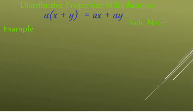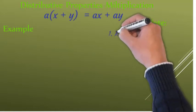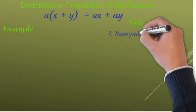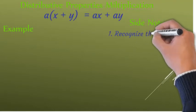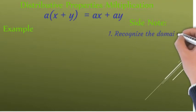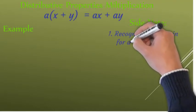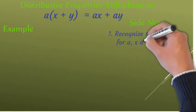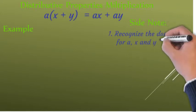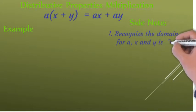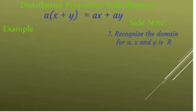Let's take some side notes. If an equation is given like that, you can set A times X plus Y is equal to AX plus AY. Recognize that the domain for A, X, and Y is R — that means real number.